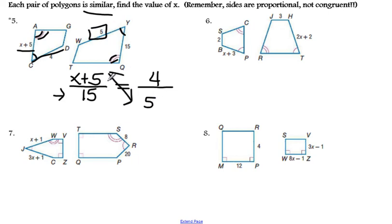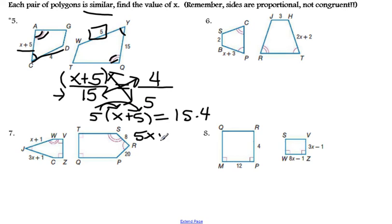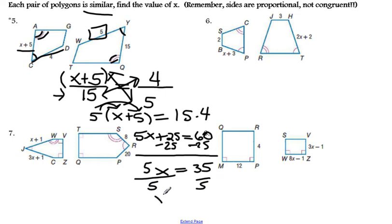Cross multiply, and remember when you have more than one term in an expression, we want to put it in parentheses. It's going to prompt us to remember to distribute. So we do 5 times X plus 5, the entire quantity, and set that equal to 15 times 4. 5 times X is 5X, plus 5 times 5, which is 25. That equals 15 times 4, which is 60. I'm going to subtract 25 from both sides of my equation. So I get 5X equals 35. Divide both sides by 5, so I get X is 7.